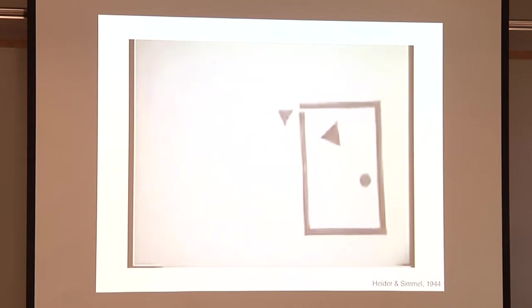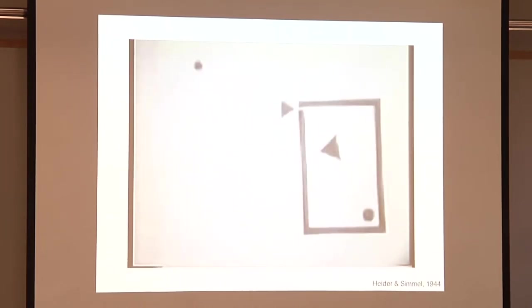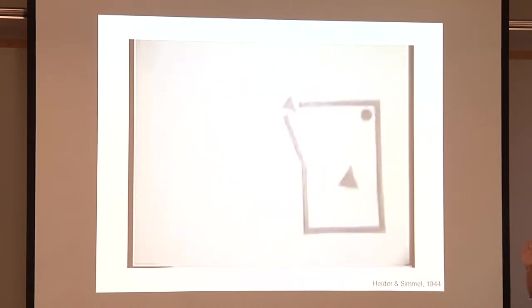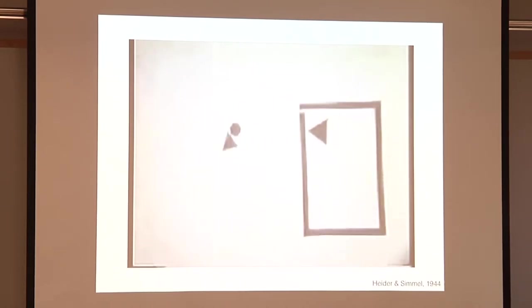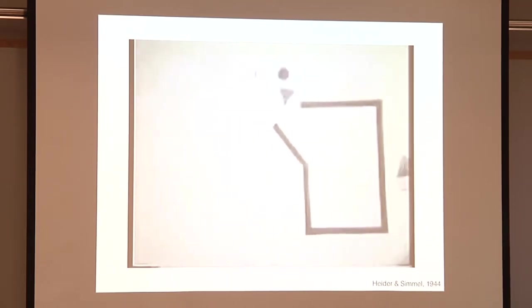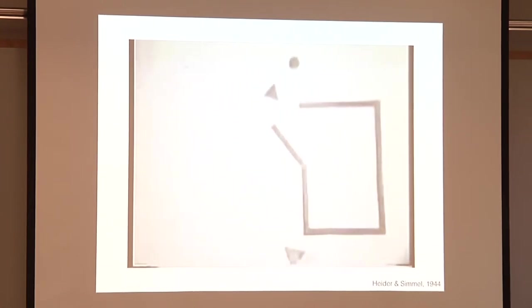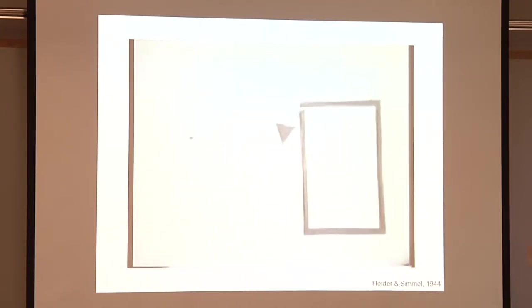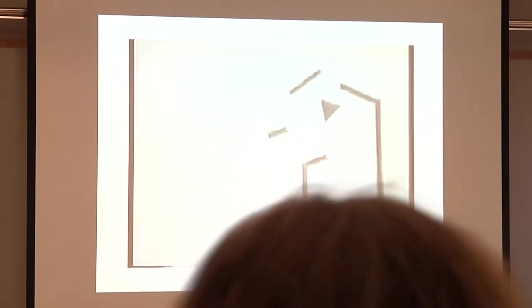But if you just downloaded this file and looked at it frame by frame, no matter how you measured the correlations between all the pixels on the screen, you'd never discover that these shapes are actually agents to you. There's a gap between what we observe, even in a very simple stimulus like this, and the underlying inferences that we make. Those inferences aren't in the data, which points to something in our minds that's making up the difference, allowing us to make these inferences in a scene most of us have never seen before.